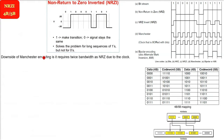But what is the downside of the Manchester coding? As I said, it requires twice the bandwidth as the NRZ, because it has a clock also and we were XOR-ing it also.